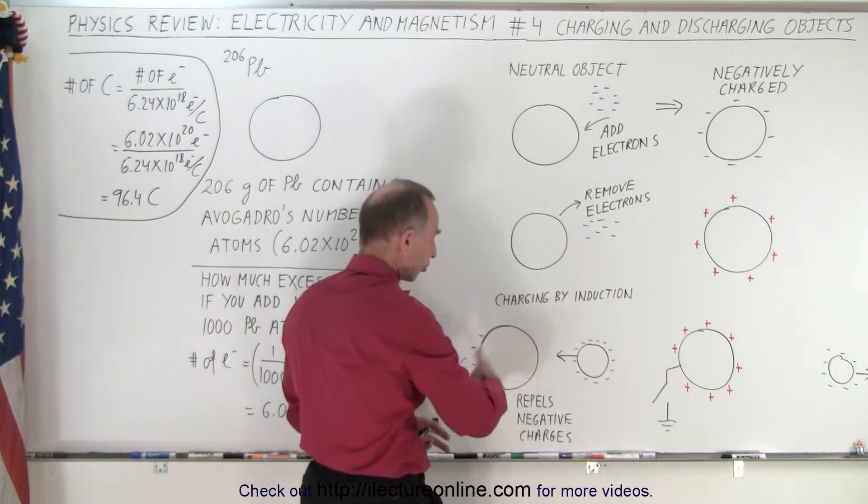Now if we want to get a feel of how much charge is on an object, let's say we have one mole of lead atoms. Lead has 206 nucleons in the nucleus, so one mole of lead has a mass of 206 grams. So we take 206 grams of lead, and it contains Avogadro's number of lead atoms.